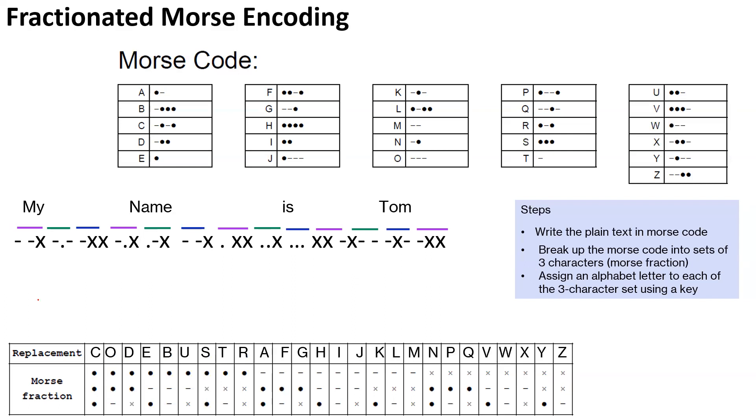Now, once we have done that, we use the mapping table to assign values to the Morse fraction. So we divided into sets of three characters here, and now we will assign value. So dash dash X, according to this is J. So this will be assigned J. The next three character set is dash dot dash. So dash dot dash is F. So that gets assigned here. So similarly, we will continue building the cipher text for the Morse fraction.